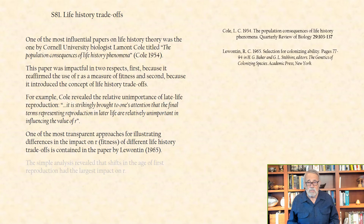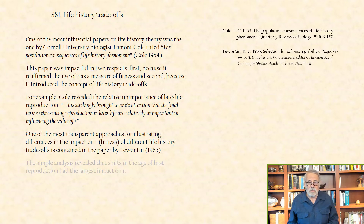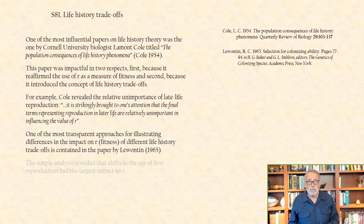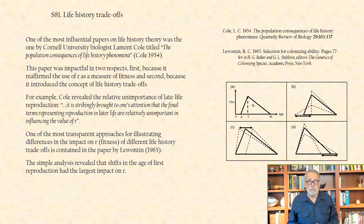One of the most transparent approaches for illustrating differences in the impact on R — that is, fitness — of different life history trade-offs is contained in the paper by Richard Lewontin in 1965. The simple analysis revealed that shifts in the age of first reproduction had the largest impact on R.